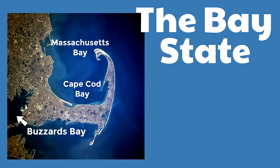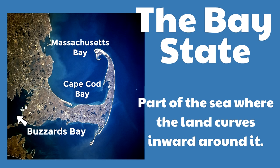And finally, way down here is Buzzards Bay. A buzzard is a bird of prey, like a vulture — so that's an interesting name! You might be wondering: what is a bay? A bay is part of the sea where the land curves inward around it. It's almost like the land is giving the sea a little side hug, and that becomes a bay.